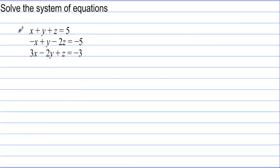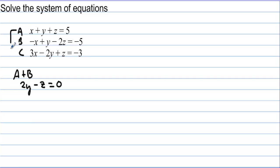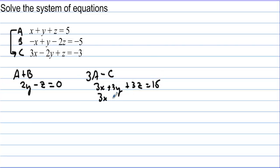Solve the system of equations. Let's call this equation A, this one B, and this one C. Let's eliminate x in equations A and B by taking A plus B — when we add them together, we get 2y minus z equals 0. Now let's eliminate x using A and C: take 3A minus equation C, so 3x minus 3x cancels. We get 3x plus 3y plus 3z equals 15, minus 3x minus 2y plus z equals negative 3. Subtracting gives 5y plus 2z equals 18.